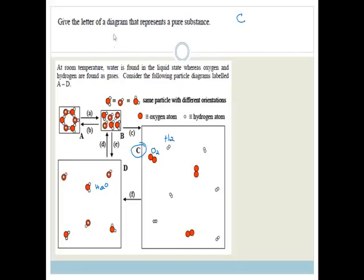Now it says, give a letter of a diagram that represents a pure substance. So a pure substance is something that is only made up of that. You could have either answered A or B or D, because A, B, and D just have water molecules in it, there's nothing else. So either A, B, or D would have worked.